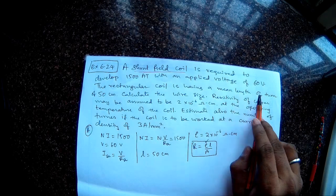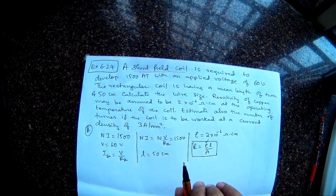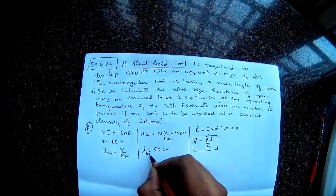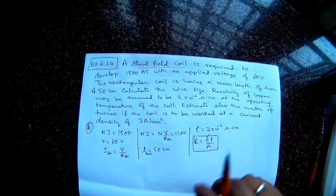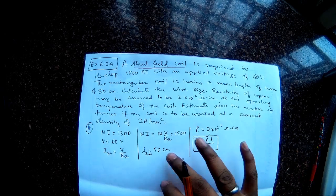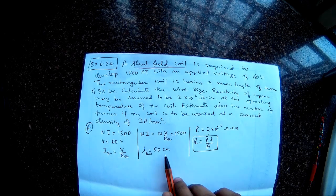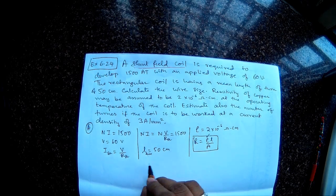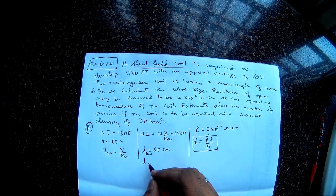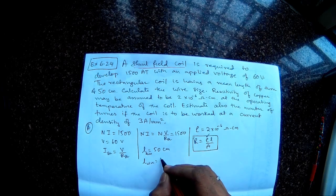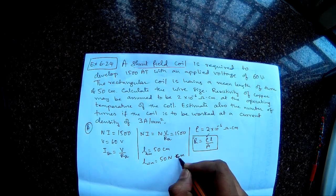Let's continue reading the question. The rectangular coil is having a mean length of turn of 50 centimeters. That means the length of one turn is 50 centimeters. So this is length of turn. So each turn is 50 centimeters, that means if there are 10 turns the total length of the wire itself will become 500 centimeters. So what is the total length? It is nothing but 50 centimeters into number of turns. So total length of the wire is nothing but 50n centimeters.